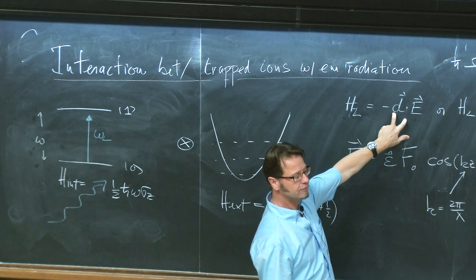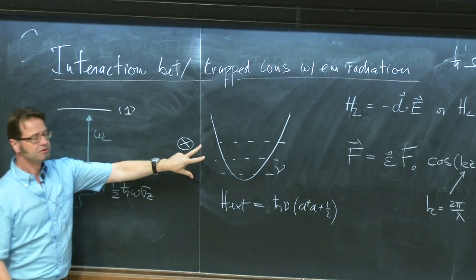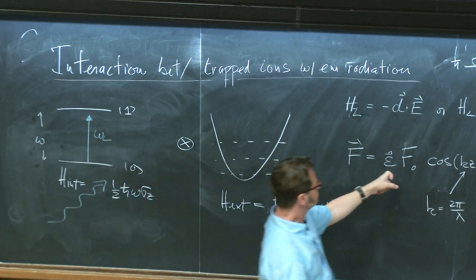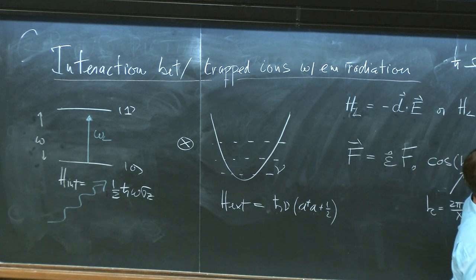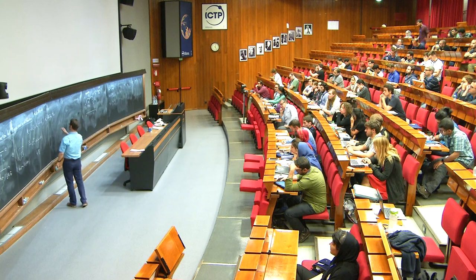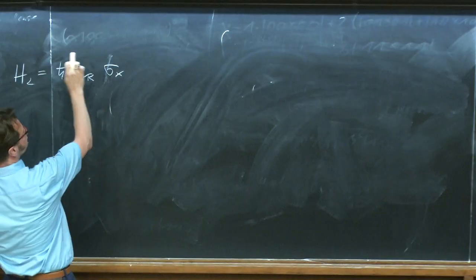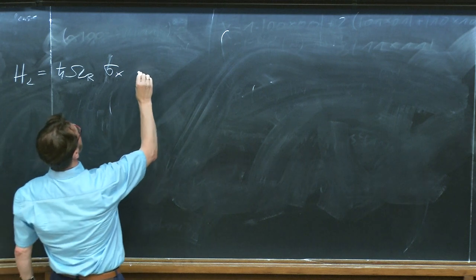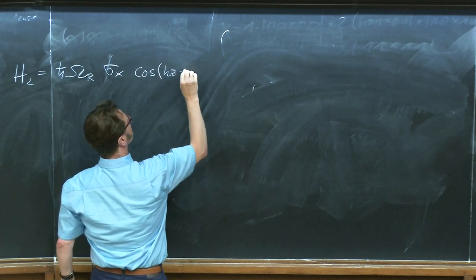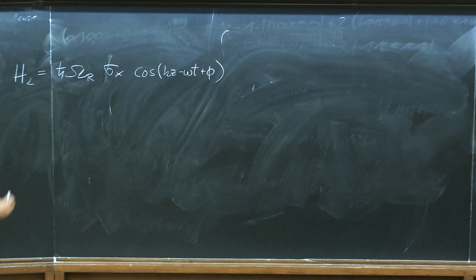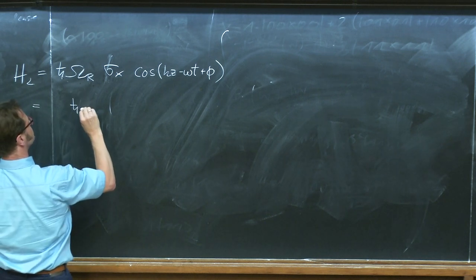That's the internal and external Hamiltonian for the atom sitting in the trap. Now we add radiation, and that's the coupling Hamiltonian that couples the radiation to the trapped ion. That's the strength of the coupling — the sigma_x term coupling these two states — and then we have our wave here.